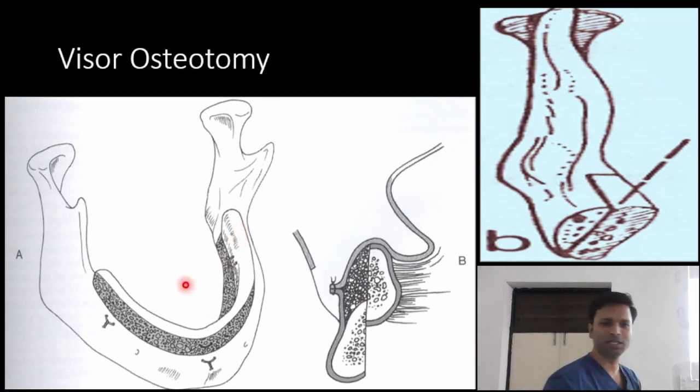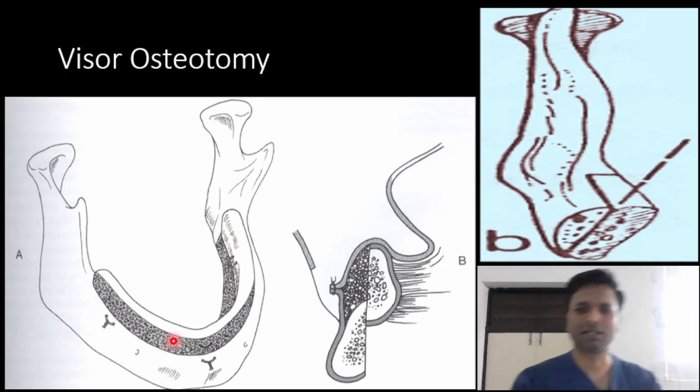We cut the mandible into medial and lateral parts, the body of the mandible. Can you see? Vertically cut, we just raise the lingual part or the medial part.